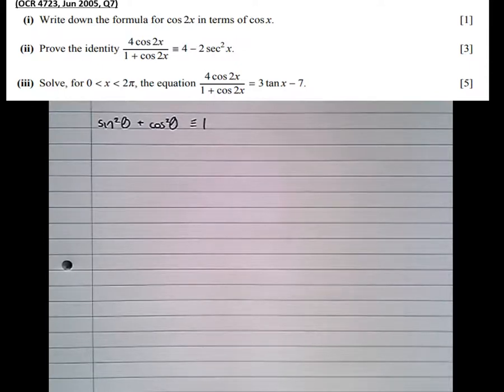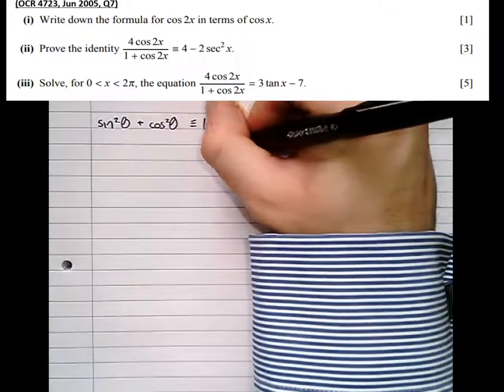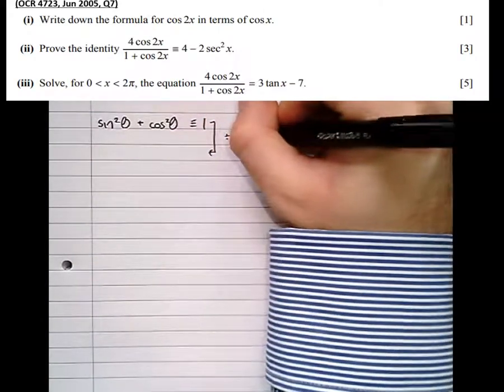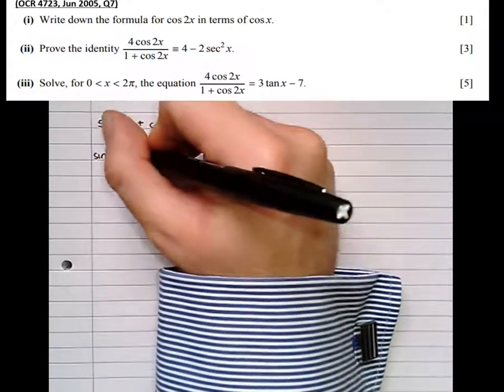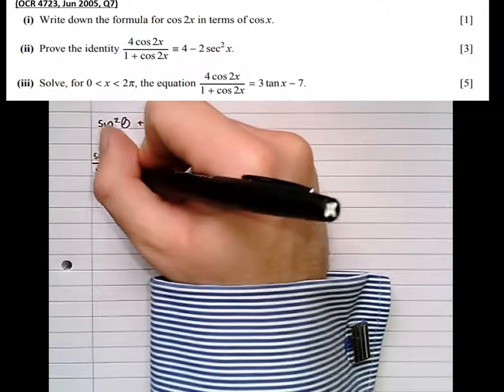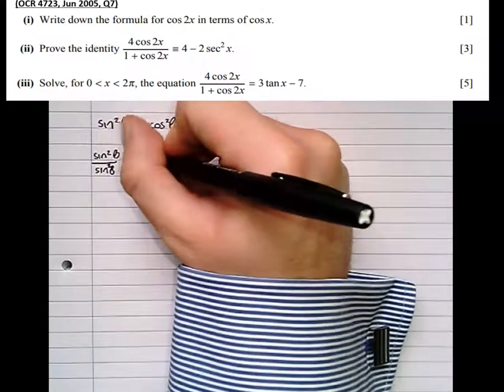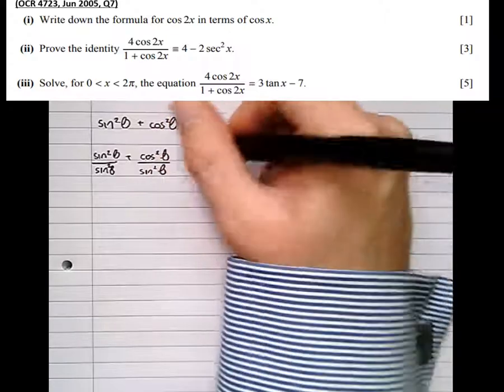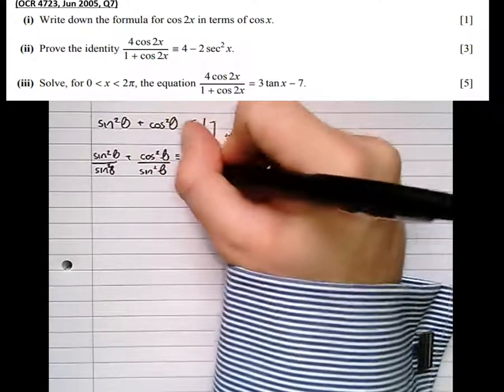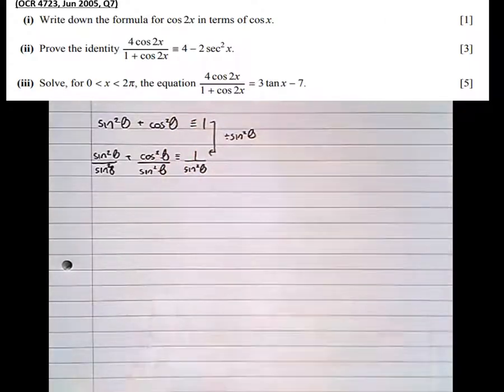Well, we can actually generate two more involving the reciprocal trig functions if we just simply divide by sine squared theta and cos squared theta. So let's do the first. Let's divide by sine squared theta. We end up with sine squared theta over sine squared theta plus cos squared theta over sine squared theta is identical to 1 over sine squared theta.